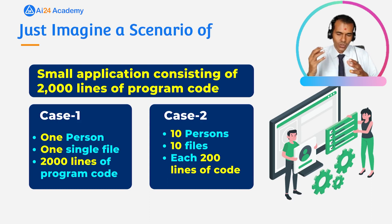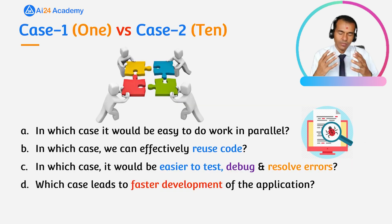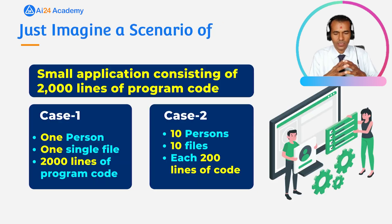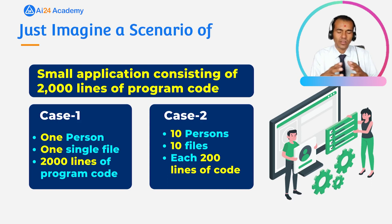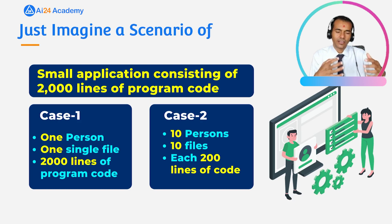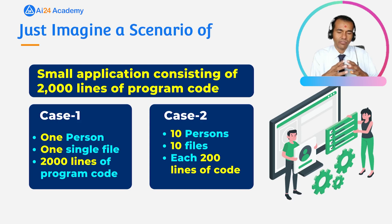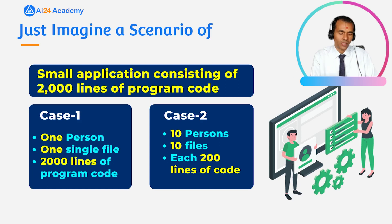In case two the application is divided into 10 different tasks, so it will be easier to work in parallel. For code reusability, in case one only one file exists, while in case two we have 10 files that can be reused across different applications. So the degree of reusability is higher in case two compared to case one.